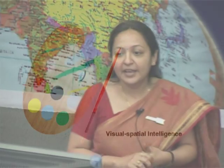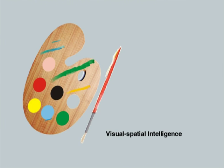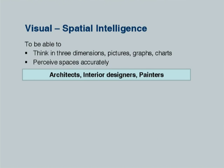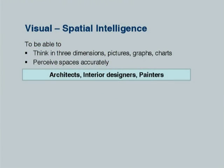Visual or spatial intelligence refers to the ability to accurately perceive spaces, think in three dimensions, and be more comfortable with graphs and charts than with text. This is typical of architects, civil engineers, interior designers, and painters who understand spaces much more differently than many of us.